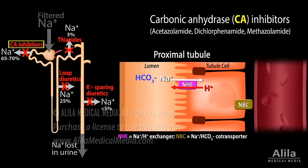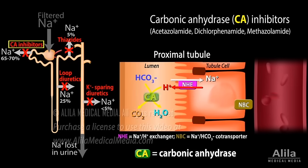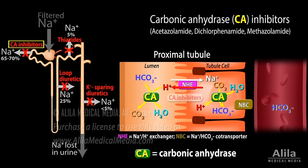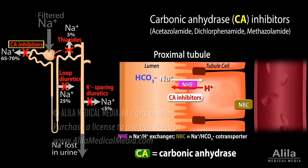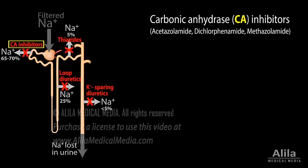Carbonic anhydrase inhibitors inhibit the enzyme carbonic anhydrase, which is required for reabsorption of bicarbonate in the proximal tubule. This leads to greater sodium loss, in the form of sodium bicarbonate, and subsequently greater water loss in the urine. These inhibitors have the weakest diuretic effect because most of the sodium lost at this early stage is reclaimed further down the renal tubule.